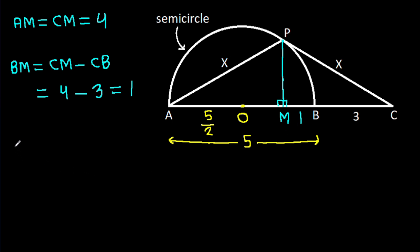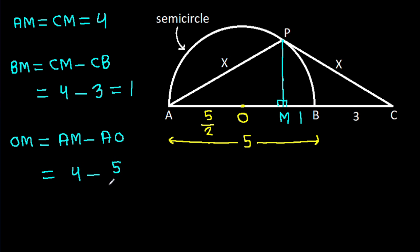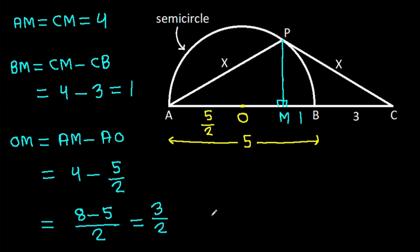And OM will be AM minus AO. AM is 4 minus AO is 5 over 2, which is 8 minus 5 over 2, that will be 3 over 2. So OM is 3 over 2.